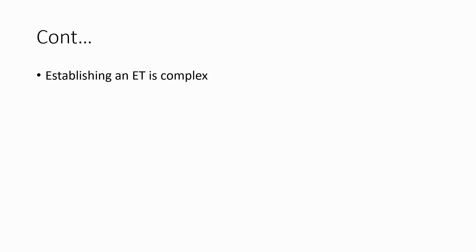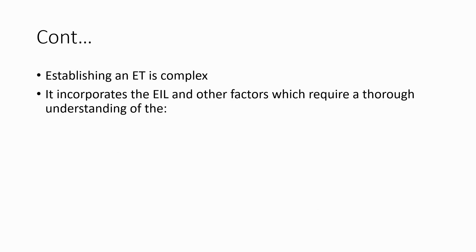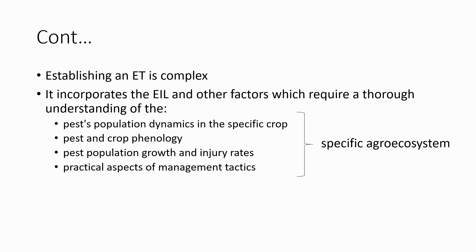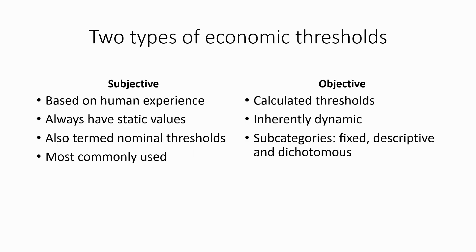Establishing an ET is a complex process as it incorporates the EIL and other factors requiring thorough understanding, such as pest population dynamics in specific crops, pest and crop phenology, pest population growth and injury rates, and practical aspects of management tactics, which are unique to specific agroecosystems. Two types of economic thresholds are subjective and objective. Subjective economic threshold is based on human experience and will always have static values — e.g., two beetles per plant — irrespective of changes in other factors. It is also termed nominal threshold and is most commonly used. Objective economic threshold is a calculated threshold based on research, and is therefore inherently dynamic. It is further categorized into fixed, descriptive, and dichotomous.